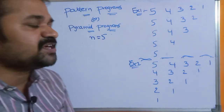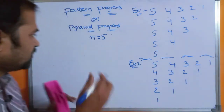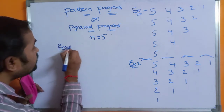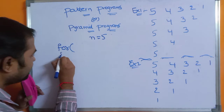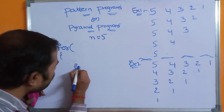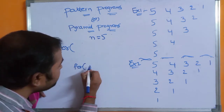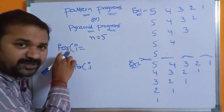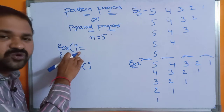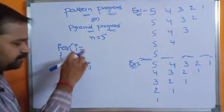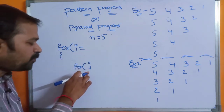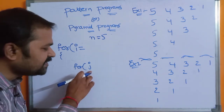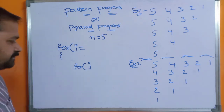We need two for loops here. The first for loop is called the outermost for loop, and the second is called the innermost for loop. We use variable i for the outermost loop and variable j for the innermost loop.